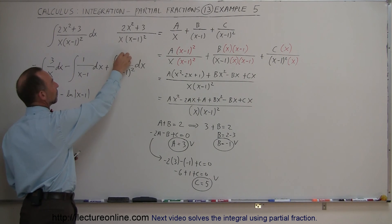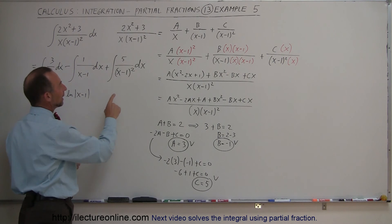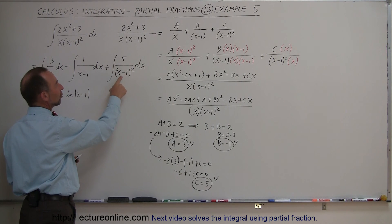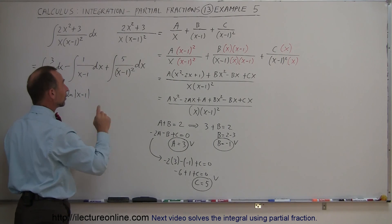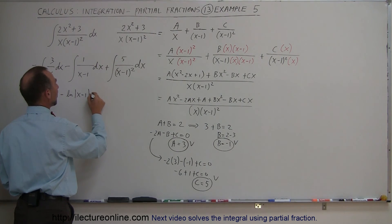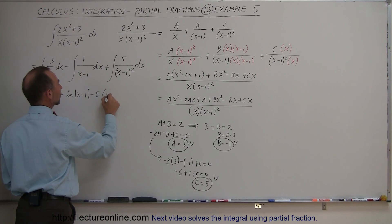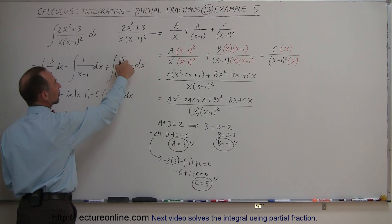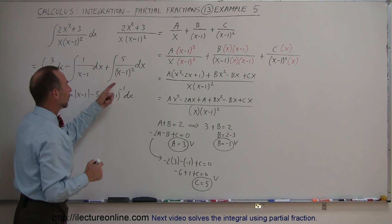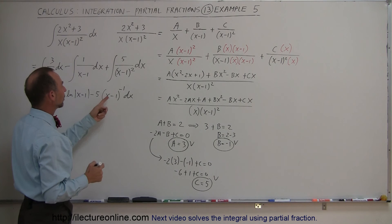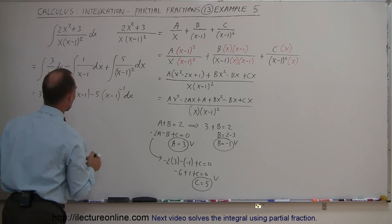How about this one right here? Well, we can take the 5 and move it in front and x minus 1 since the differential of what's inside the parentheses here is simply dx. We can integrate that. That would become minus 5 times the quantity x minus 1 to the minus 1 power because this is actually x minus 1 to the minus 2 power. And when we integrate it, the negative comes out and we end up with an x minus 1 to the minus 1.